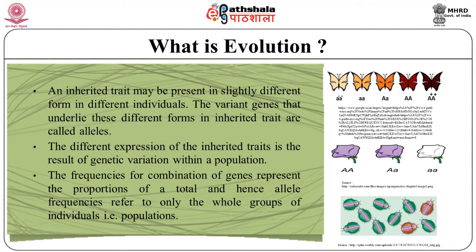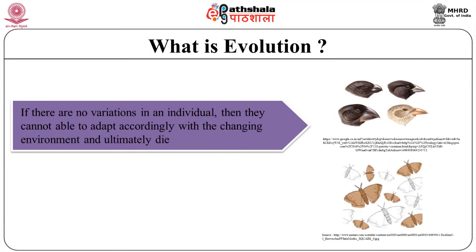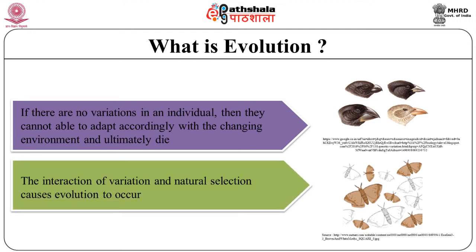Individuals do not have allele frequency — they have genes or combinations of genes. Therefore, an individual cannot evolve; only a group of individuals can evolve over time. If there is no variation in individuals, they cannot adapt to a changing environment and will ultimately die. The presence of variability ensures the fitness of individuals who are well adapted to the environment due to their heritable qualities. The interaction of variation and natural selection causes evolution to occur.